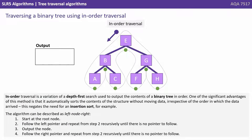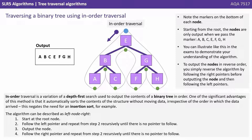With an in-order traversal, we put those little green markers at the bottom. In-order traversal is a variation of depth search used to output the contents of a binary tree in order. One of the significant advantages of this method is that it automatically sorts the contents of the structure without moving the data, irrespective of the order in which the data arrived — this negates the need for an insertion sort. The algorithm is described as a left-node-right traversal. We start at the root, follow the left pointer recursively until there's no pointer to follow, output the node, then follow the right pointer recursively. This gives us the output A-B-C-E-F-G-H. To output these nodes in reverse order, you simply reverse the algorithm by following the right pointers before outputting the node and then following the left pointers.